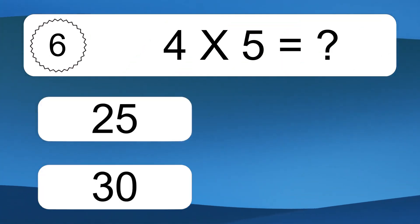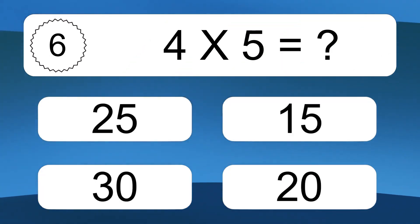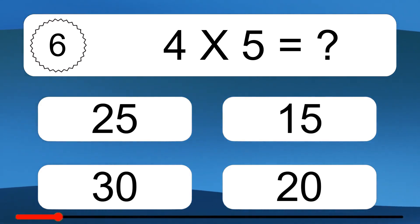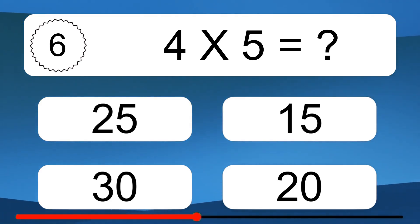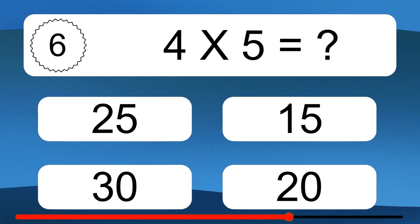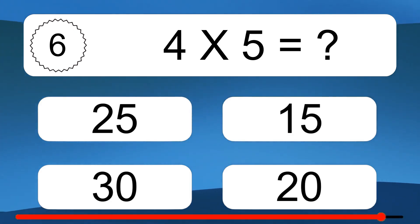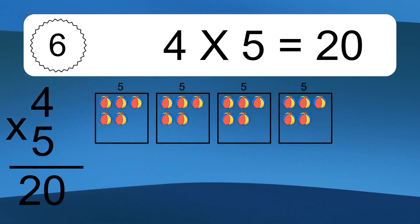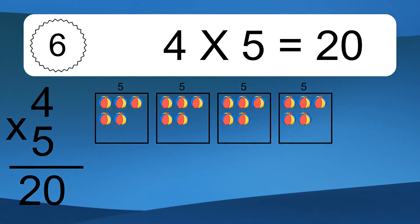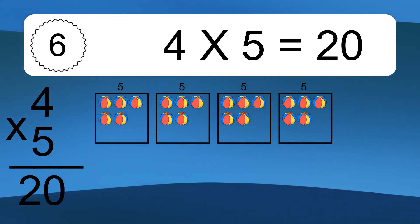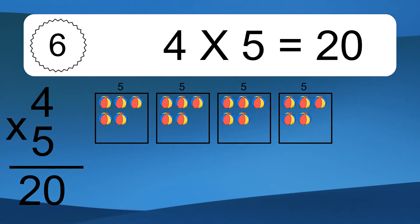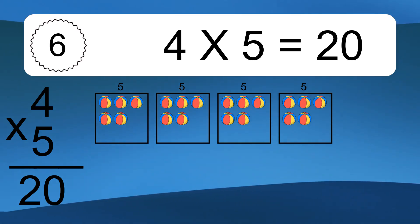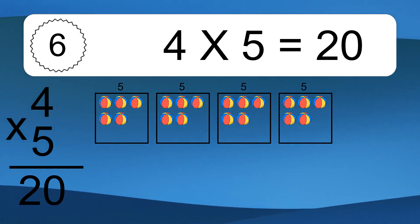4 times 5 equals what? 4 times 5 equals 20. We have 4 boxes, and each box has 5 colorful balls inside. If you count all the balls in all the boxes together, you will have 4 times 5 balls. This equals 20 balls.